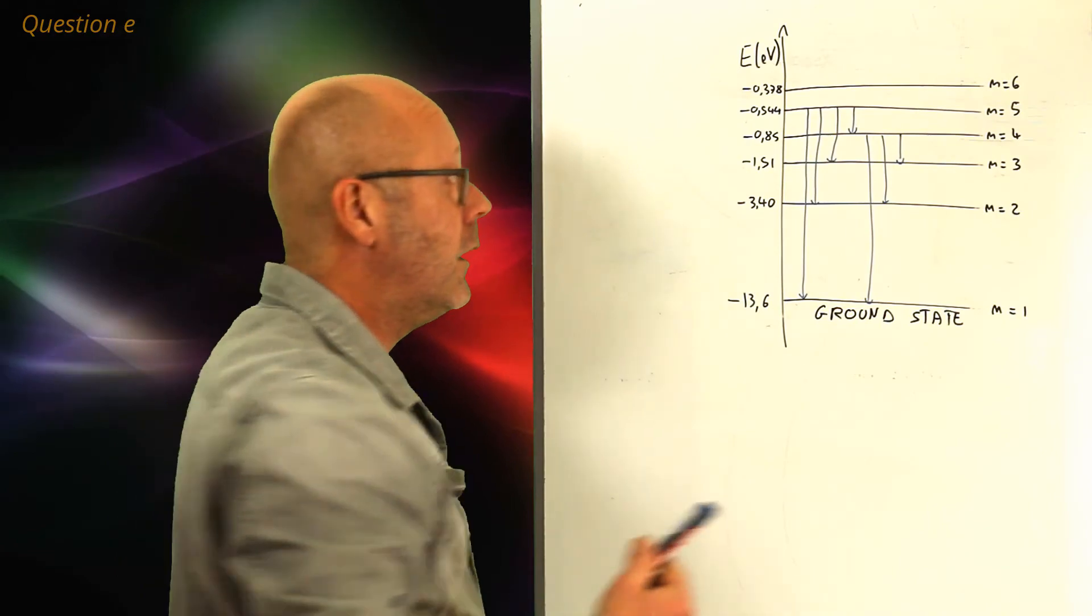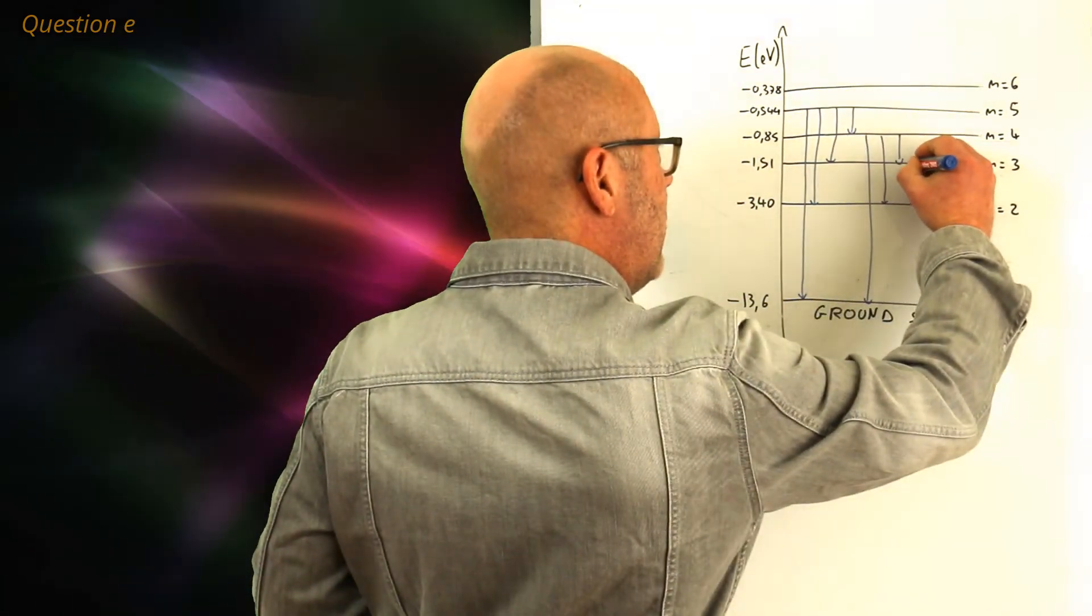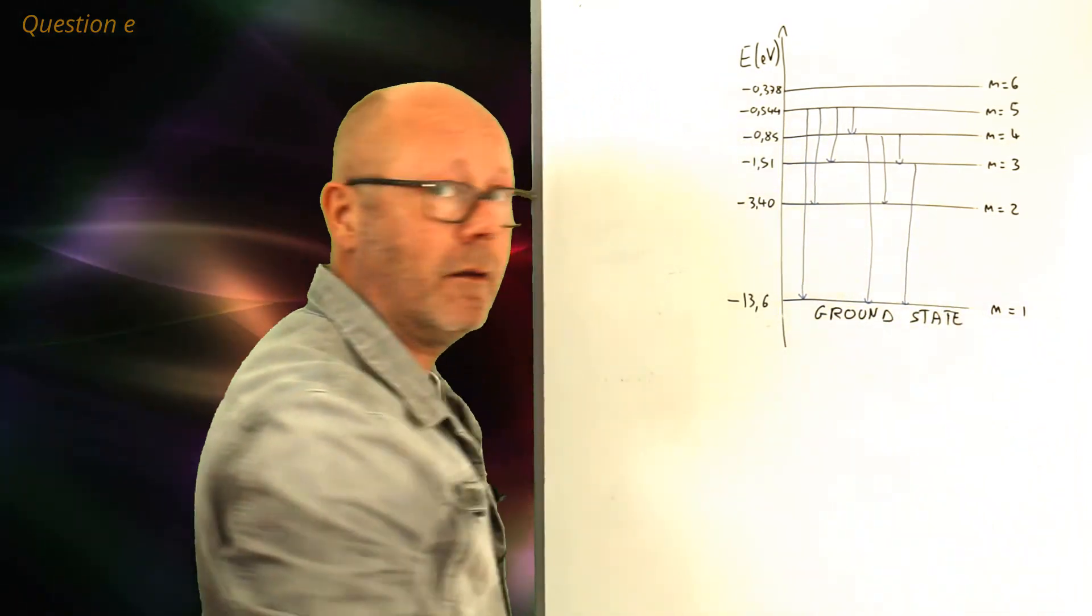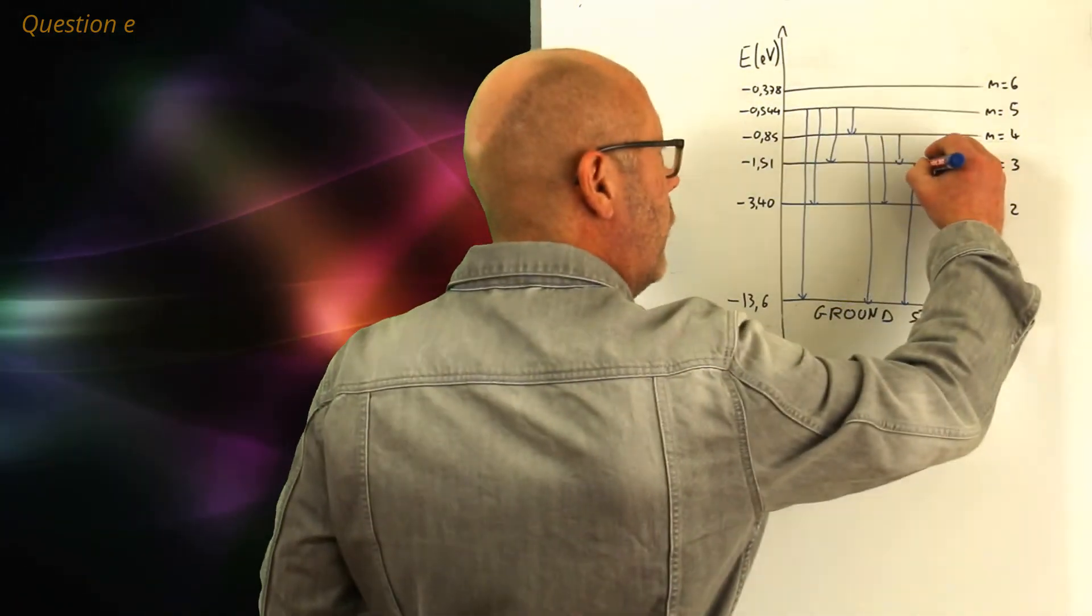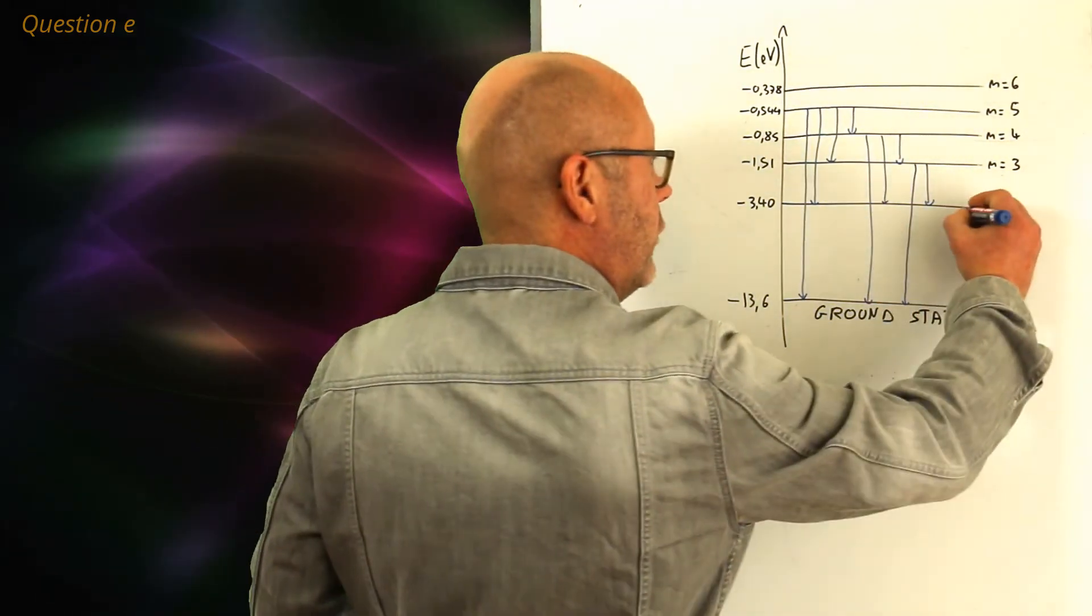Same thing for level 3. The atom could be at level 3. So, it could also emit photons correspond to a difference of energy between 3 and 1. Or 3 and 2. And finally, you would have a last transition from 2 to 1.